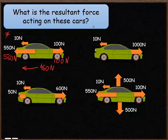The second question is fairly straightforward. We've got two forces: one forwards, one backwards. The forwards force of 1000 newtons is bigger, so that tells us the direction. The size of the resultant force will be 990 newtons, taking the 10 newtons away from the 1000 newtons.